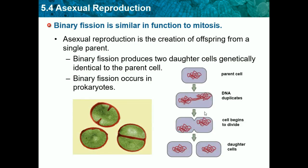This is the process — it's exactly like mitosis. This is the parent cell: it duplicates DNA and then it divides. So it's the same thing as mitosis, but it occurs in more simple, unicellular prokaryotes.